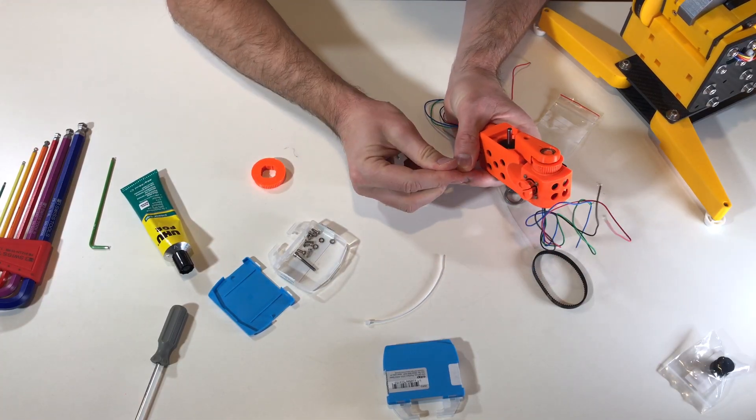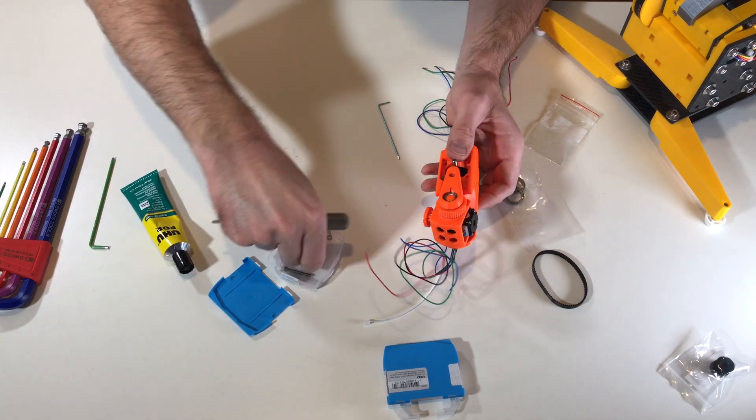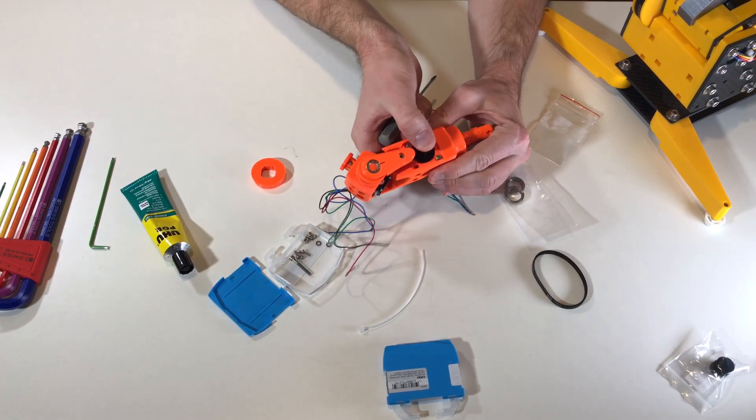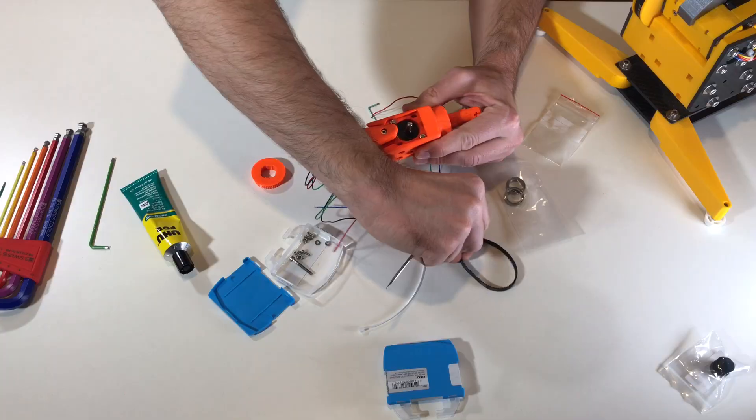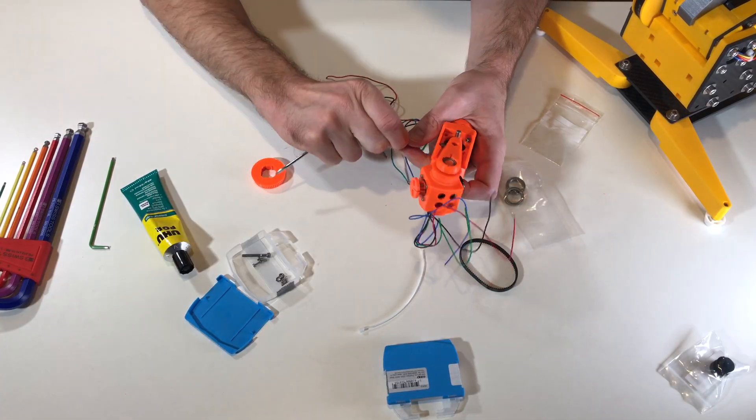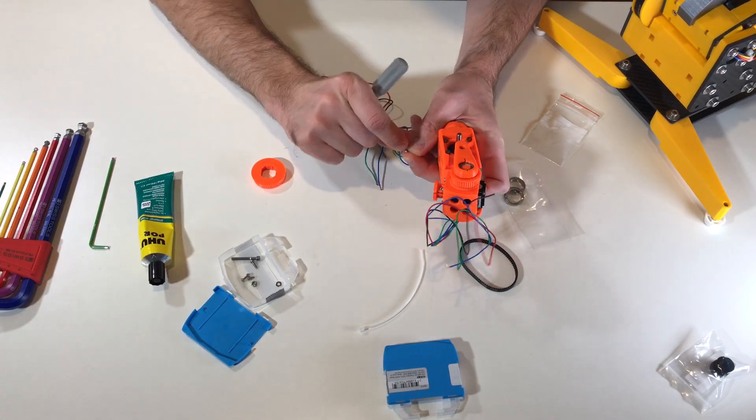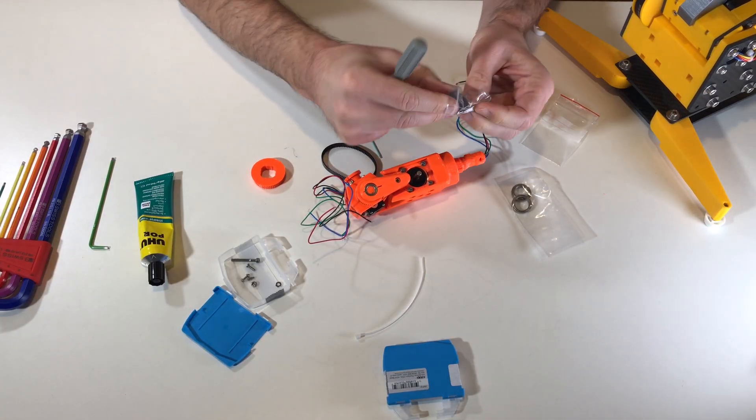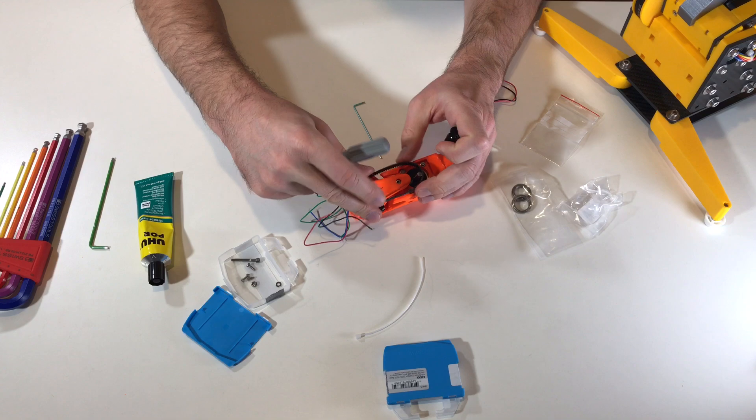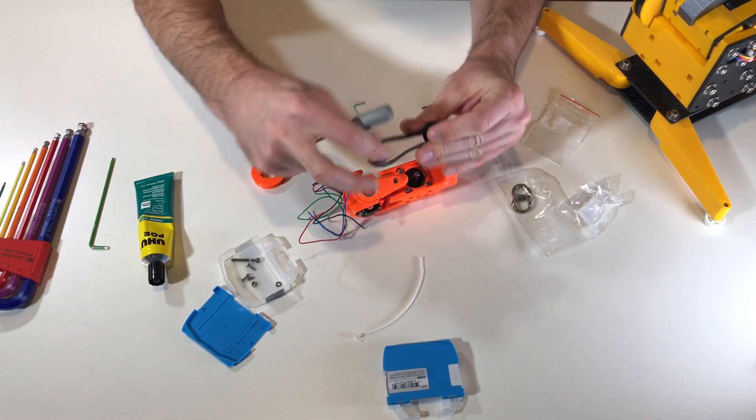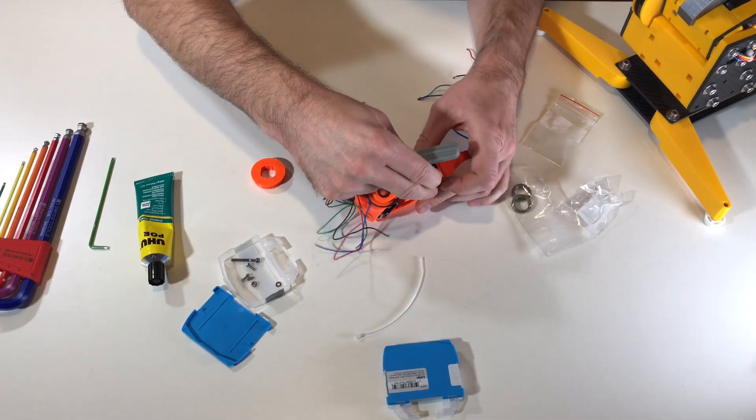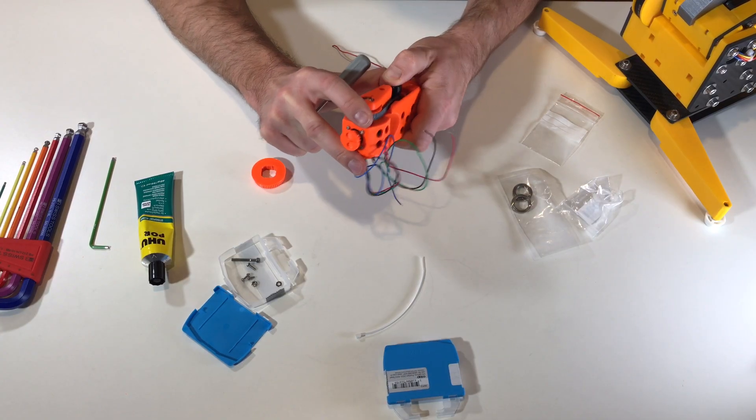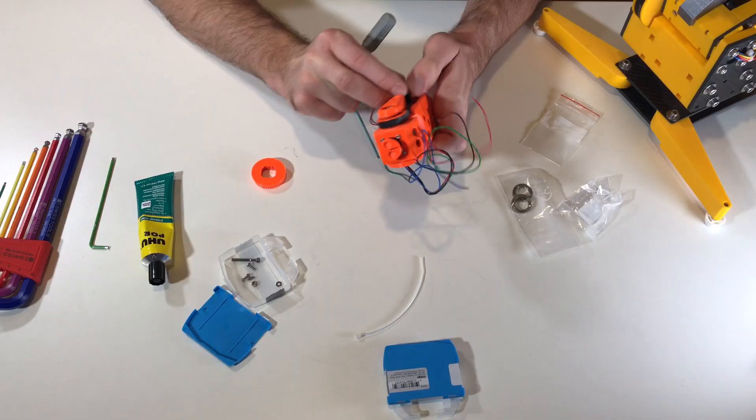Now I will secure the motor with these screws. And this motor moves like this so we can tighten the belt. So this is the pulley which goes on the motor. And it goes on the motor like this. So first I will tighten the belt with all the force that I have.